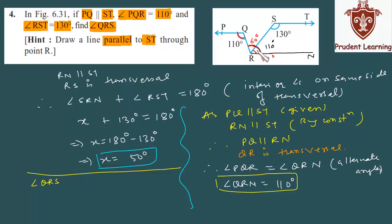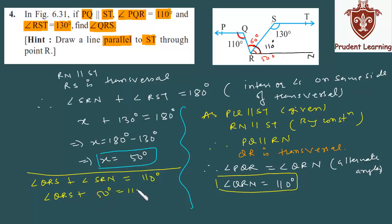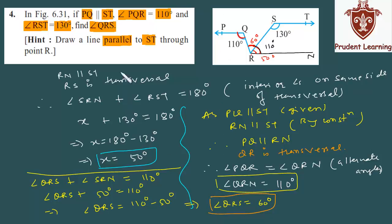Angle QRS plus angle SRN equals angle QRN, which is 110 degrees. Therefore angle QRS equals 110 minus 50, which gives angle QRS equal to 60 degrees. So this is your final answer — angle QRS is 60 degrees.